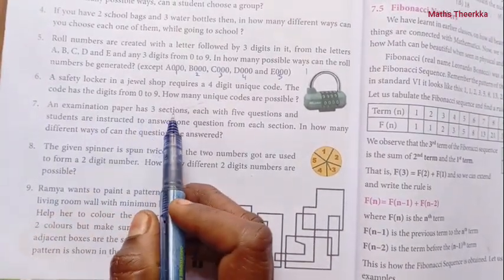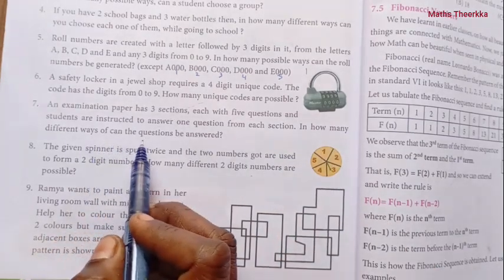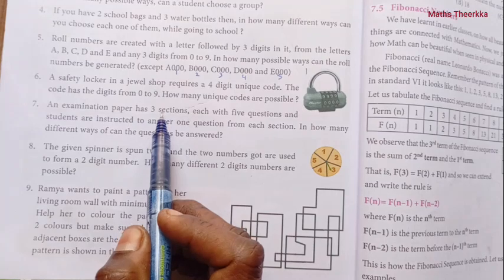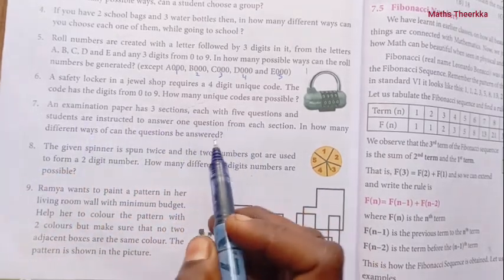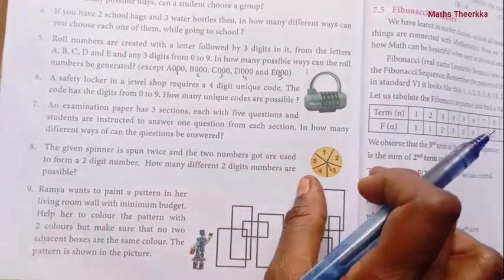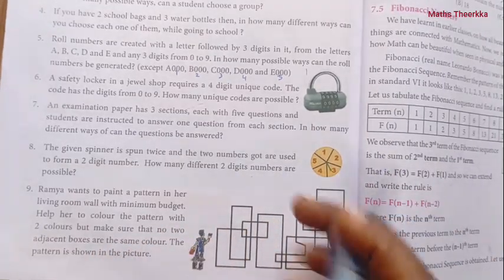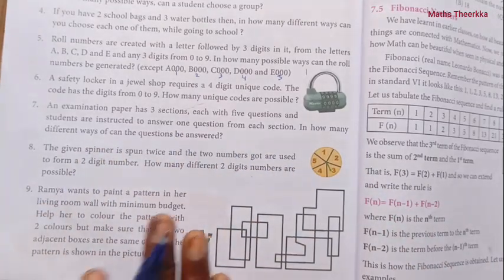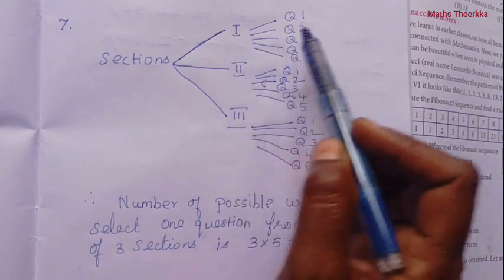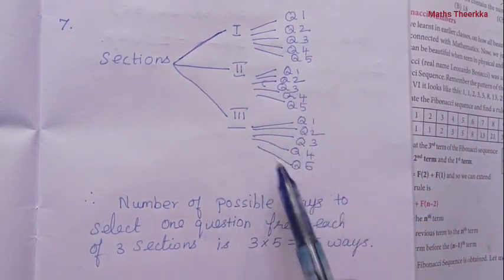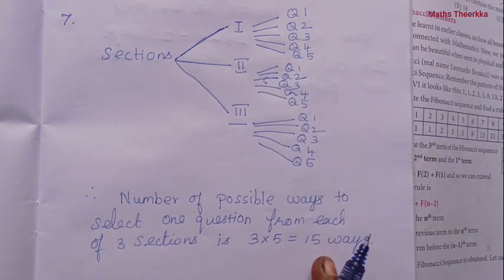Seventh question: An examination paper has 3 sections, each with 5 questions. Students are instructed to answer 1 question from each section. Number of possible ways to select 1 question from each of 3 sections is 5 × 5 × 5... the speaker states 3 × 5 = 15 ways.